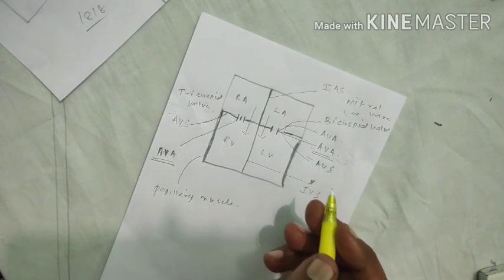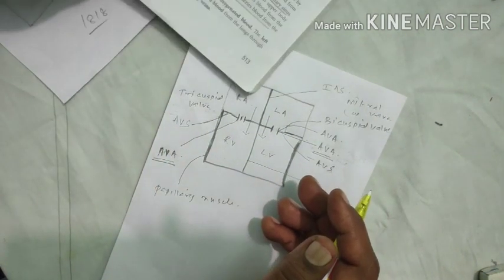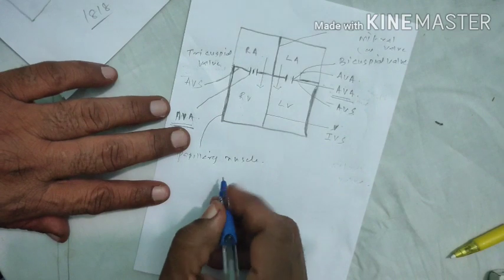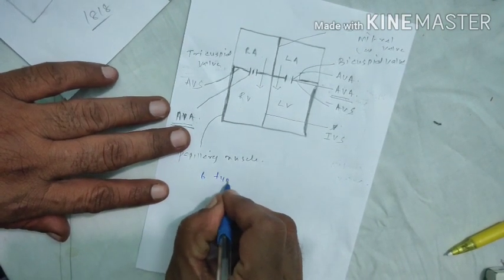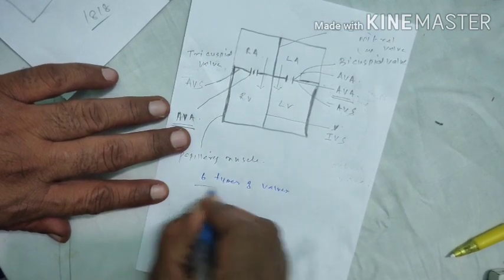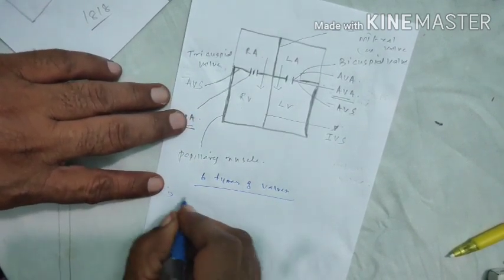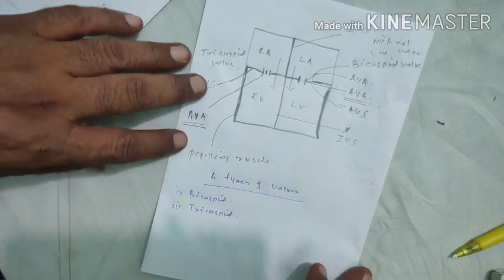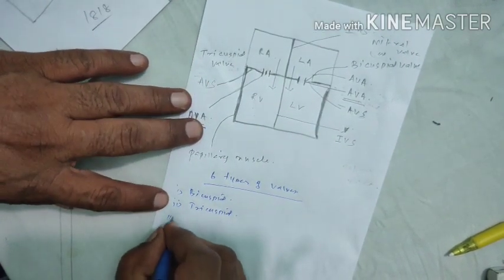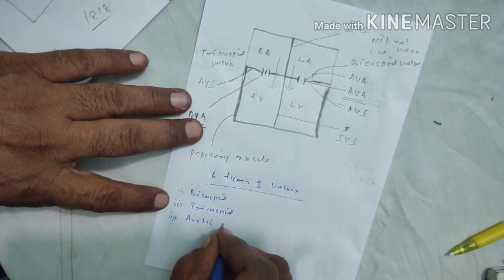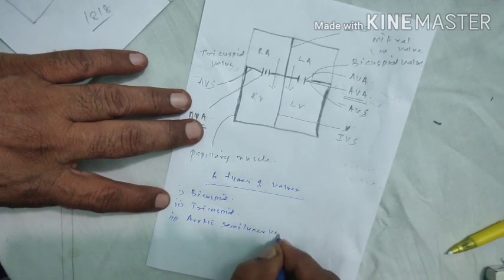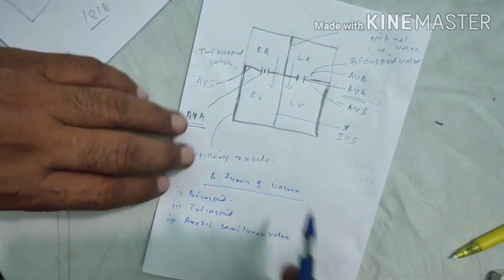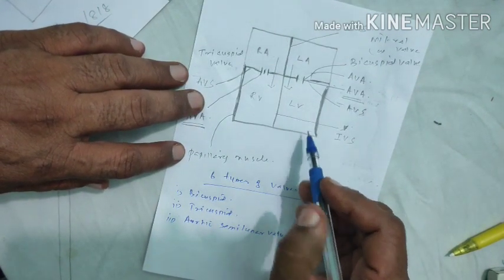Apart from that, there are other valves in the heart. In total, there are six types of valves in the heart. One is bicuspid. Two is tricuspid. The third is the aortic semilunar valve, which is present between the left ventricle and the aorta.